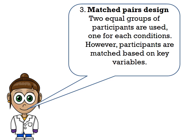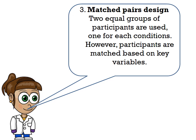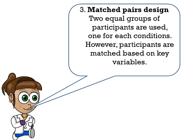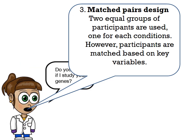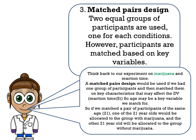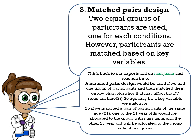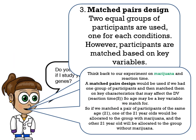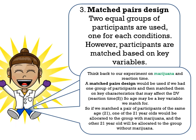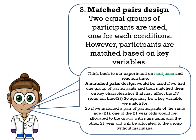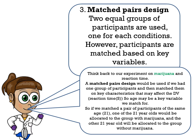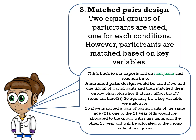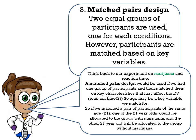The last experimental design is matched pairs design, which is really similar to independent groups. Two equal groups of participants are used, one group for each condition, but the difference is that participants are matched based on key variables. In our marijuana and reaction time experiment, participants would be matched on key characteristics that may affect the dependent variable — reaction time. For example, age could affect reaction time, so a pair of 21-year-olds would be matched: one allocated to the group with marijuana, the other to the group without marijuana.